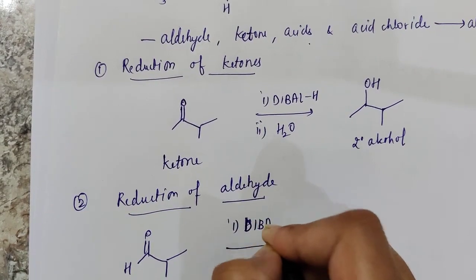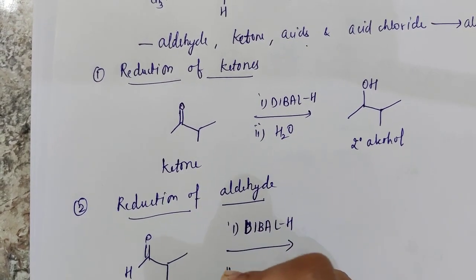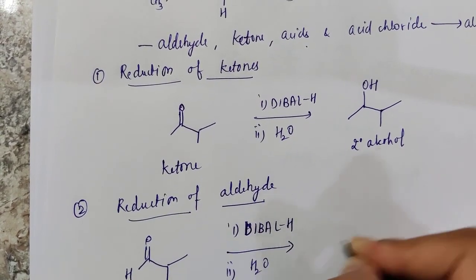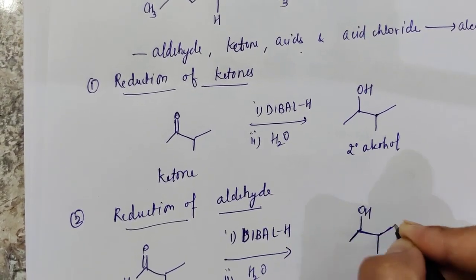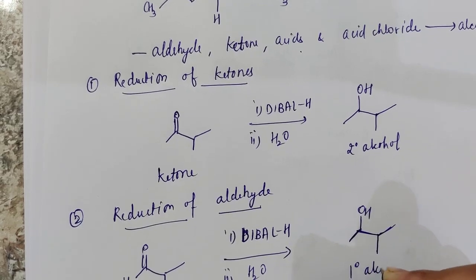Again it will give us alcohol but in case of aldehyde, the alcohol form will be primary alcohol. So OH this will be the product, primary alcohol.